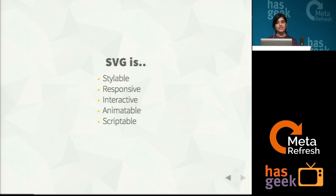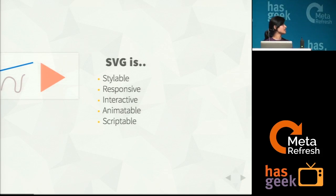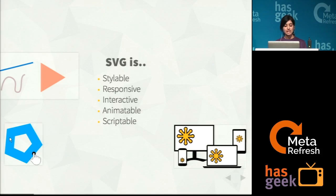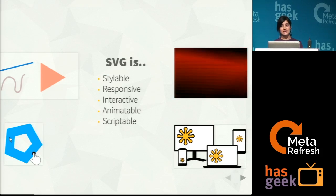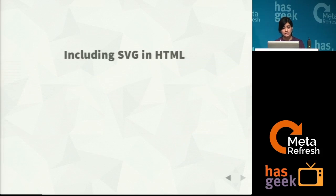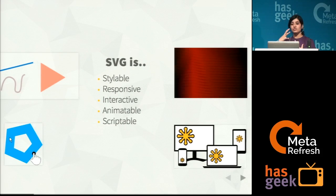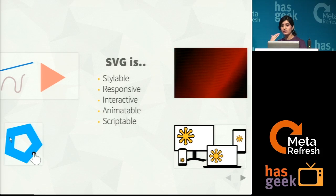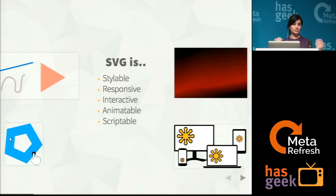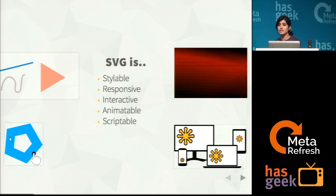Coming to the properties of SVG: SVG is stylable — you can use CSS or SVG styles. It's responsive — it works across multiple devices, multiple screens, platforms, and works well with media queries. It's interactive — you can add event listeners to it and work with it as you would with any other DOM elements. It's animatable — you can add CSS or SVG animations. And it is scriptable — you can generate your SVG and add it to your DOM dynamically. Frameworks like Raphael or Snap make use of the scripting capability of SVG and generate really good graphics you can use directly within your HTML.